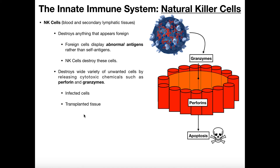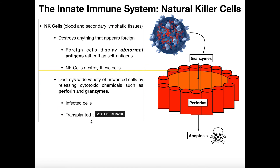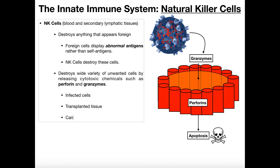There are several types of cells natural killer cells are expected to destroy. One is virus-infected cells. Another is transplanted tissue — if you get a liver transplant, tissue rejection can occur because natural killer cells attack the foreign tissue since it carries a very foreign antigen. And of course, cancerous cells: if a cell becomes cancerous, it usually starts displaying abnormal self-antigen, and the natural killer cell will recognize it and destroy it by this mechanism.